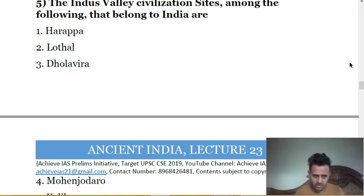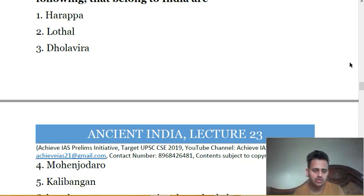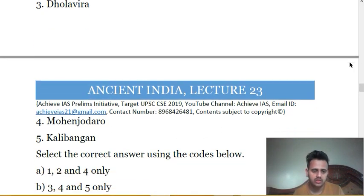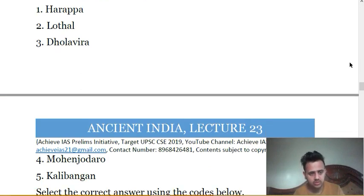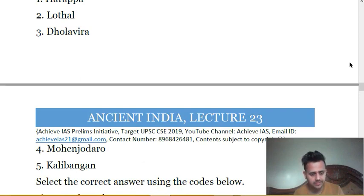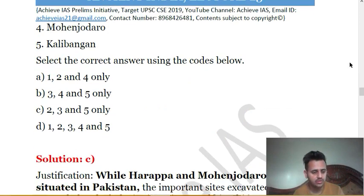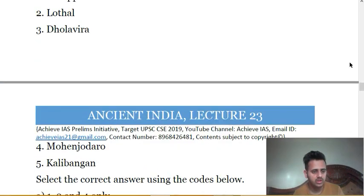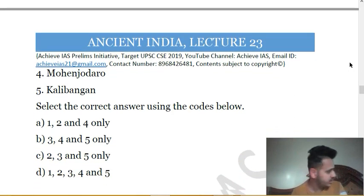The correct answer includes Lothal, Dholavira, and Kalibangan — that is options two, three, and five. The answer is C. Kalibangan is in Rajasthan. Dholavira and Lothal are in Gujarat. Rakhigarhi is in Haryana and Ropar is in Punjab. Kalibangan and Balathal are in Rajasthan.